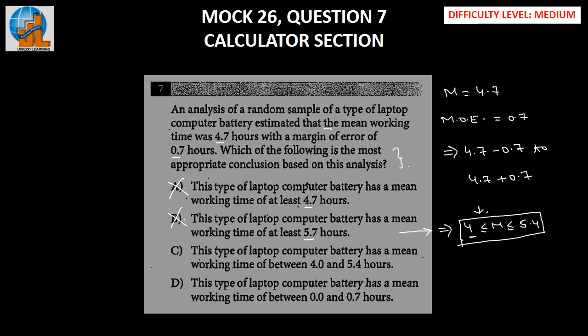Let's go to option C. This type of laptop computer battery has a mean working time of between 4 and 5.4 hours. So this is exactly what we have found out here, and hence option C is the right answer.